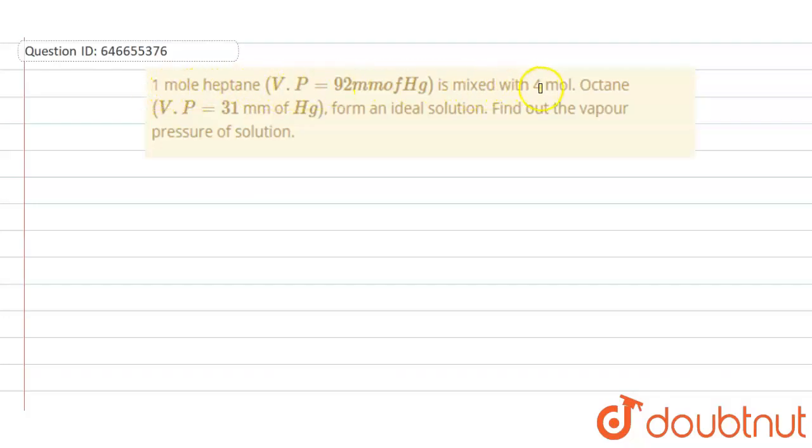One mole of heptane is mixed with four mole of octane. Vapor pressure of heptane given is 92 mm of Hg, vapor pressure of octane is 31 mm of Hg. Form ideal solution, find out the vapor pressure of the solution. We need to find the vapor pressure of the whole solution, that is mixture of heptane and octane.